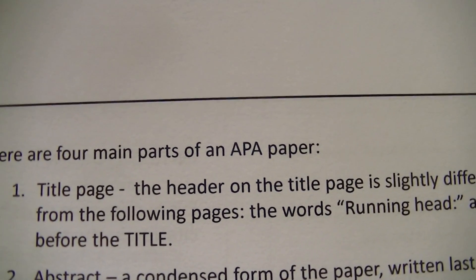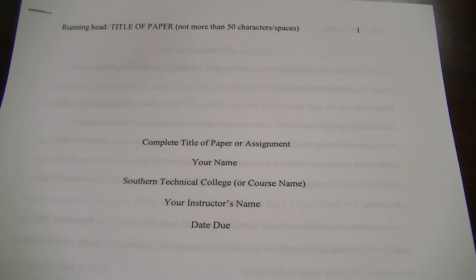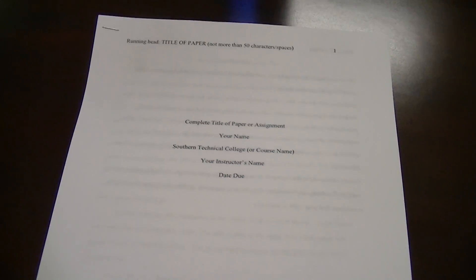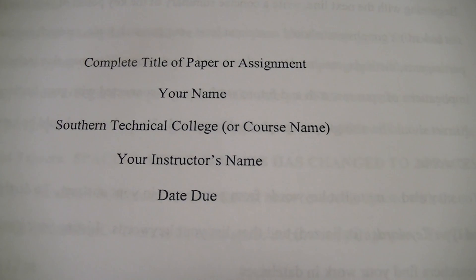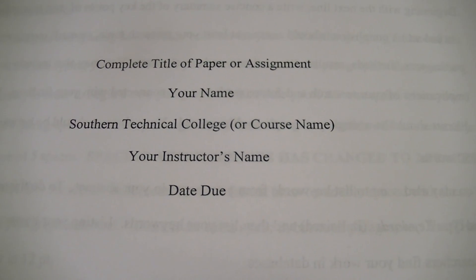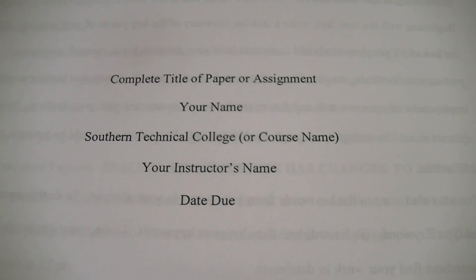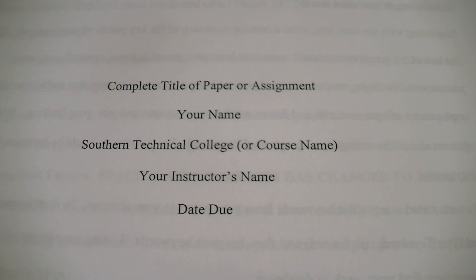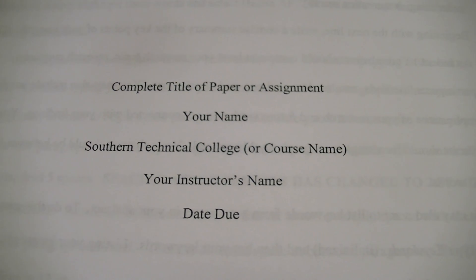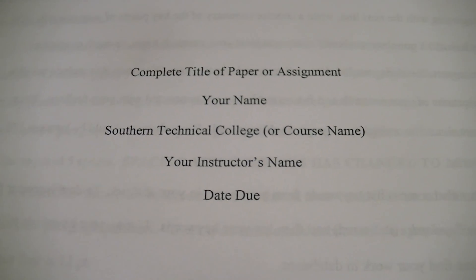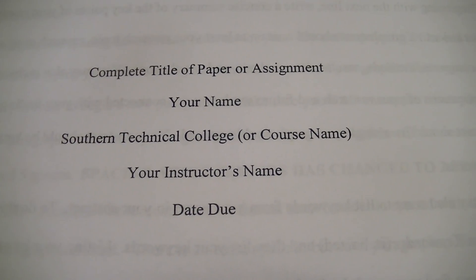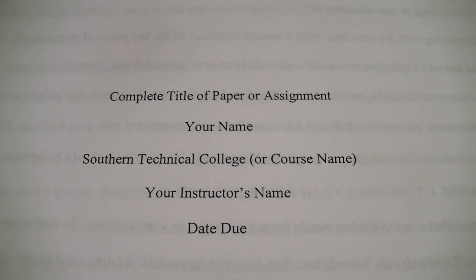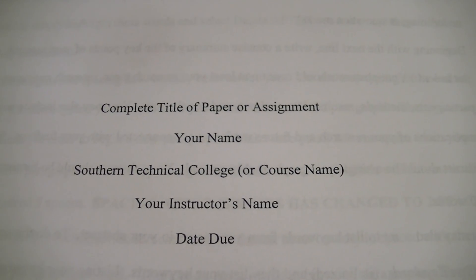First is going to be your title page, and it has a slightly different look to it. You're going to center in the middle of the paper your title, your name, the college, and the instructor's name and due date. But I will caution you to always double check with your instructor — some want the name of the assignment, some don't care about the college name. It can vary by teacher, but usually you at least have the title, your name, and the instructor's name and due date. Some instructors prefer the course name instead, so double check with your instructor to see what their preference is.